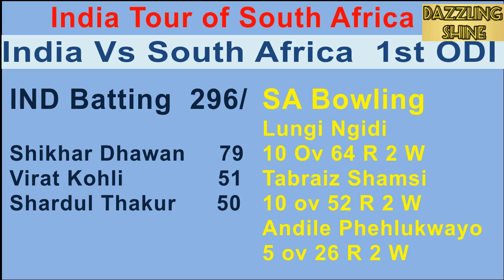First ball of the 35th over, Pell Q to Pant — going down the leg side, called a wide. Pant comes forward to play and the wicket keeper takes the bails off — he's been stumped out. Big wicket: Pant is gone for 16.